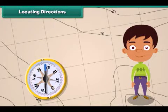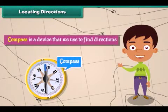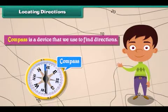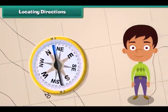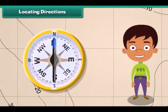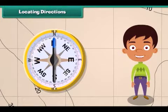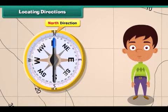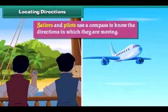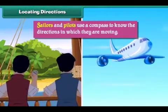A compass is a device that we use to find directions. A compass has a needle that rotates to indicate direction. The head of the needle always points towards north and the tail towards south. Sailors and pilots use a compass to know the directions in which they are moving.